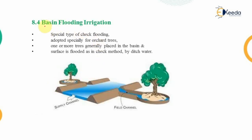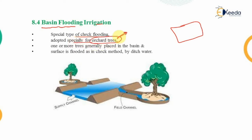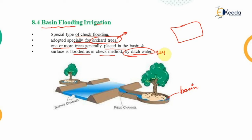The next method is basin flooding irrigation, which is also a type of check flooding — we construct an area within which water is confined. However, this is a special case suitable for orchard trees, the type of trees typically found in gardens. In each check area, one or more trees are placed, and this check area is known as a basin. The surface is flooded as in the check method, through the supply ditch.